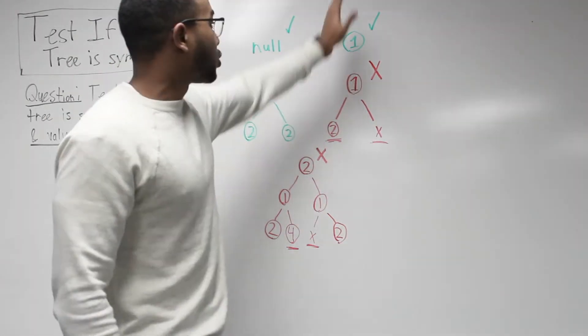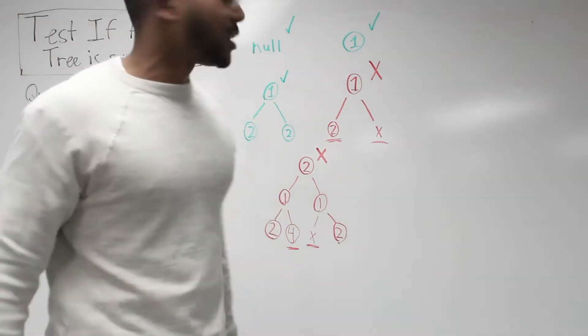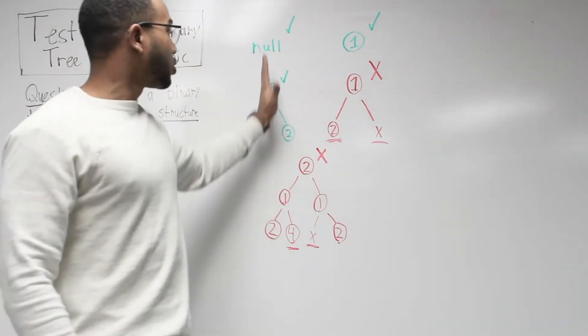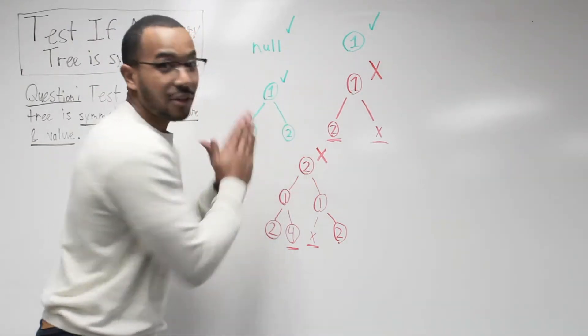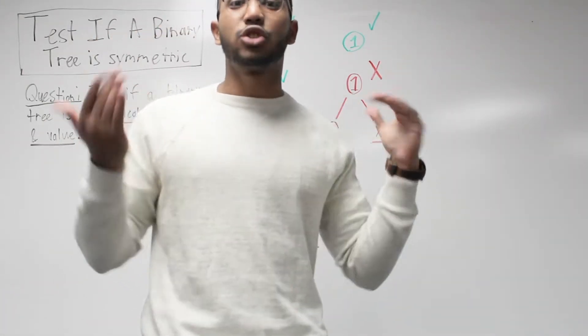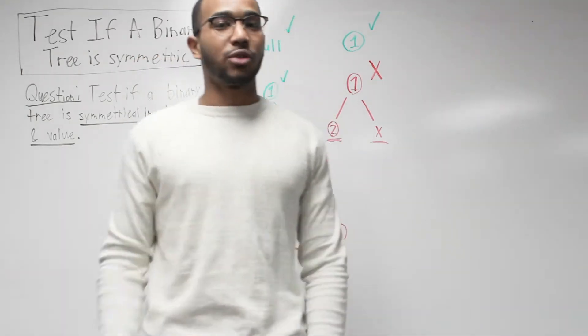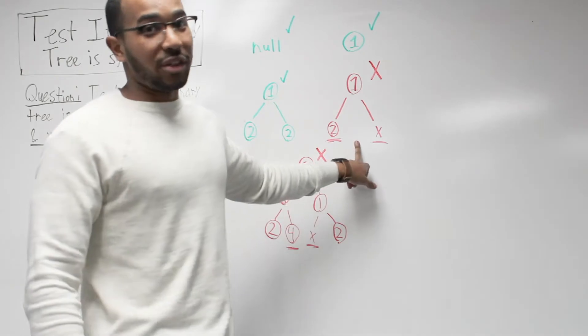Here are examples. If we have null, that is an equivalent tree. If the root is null, then it's symmetrical. If we just have one node and draw a line straight through, it's still symmetrical. If we have a tree like this with root of one and two and two, if we draw a line straight through, they'll fold on each other and those twos are the same.